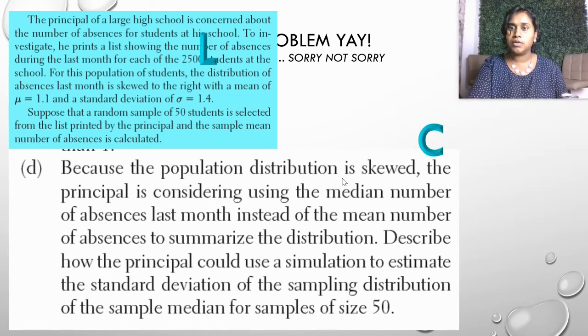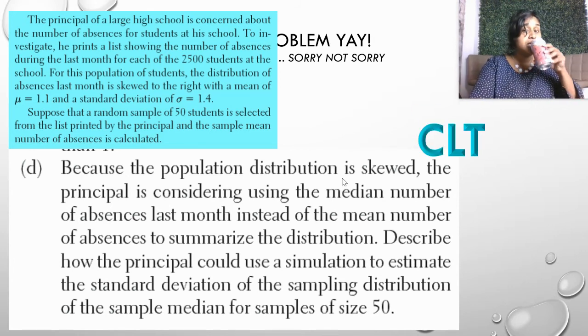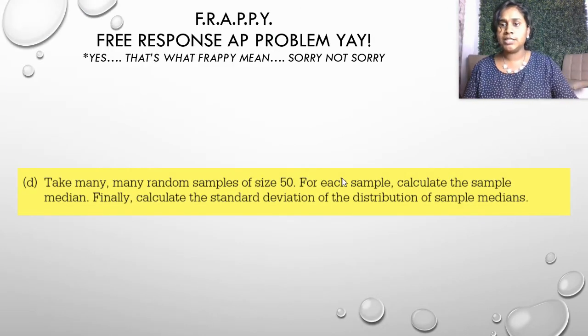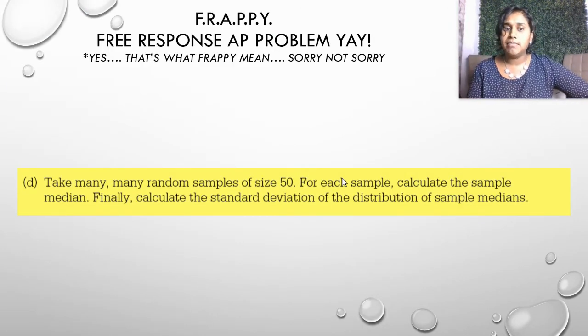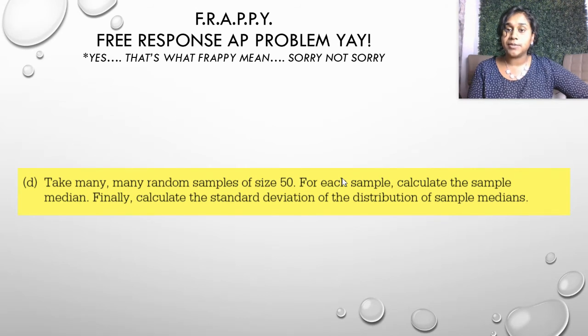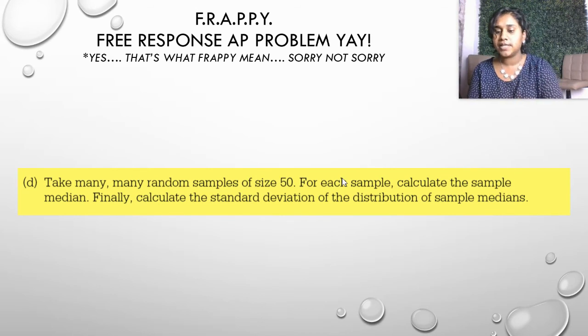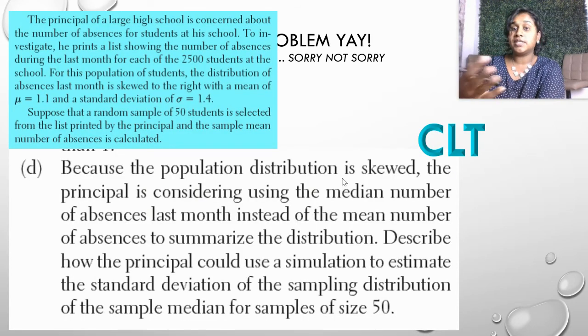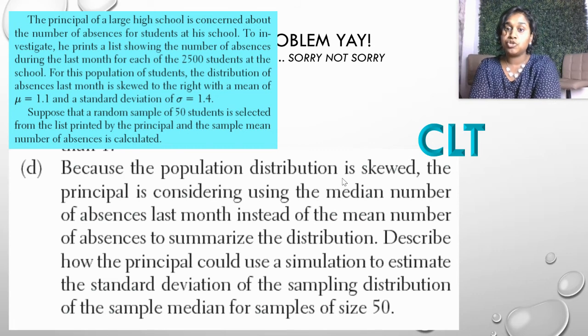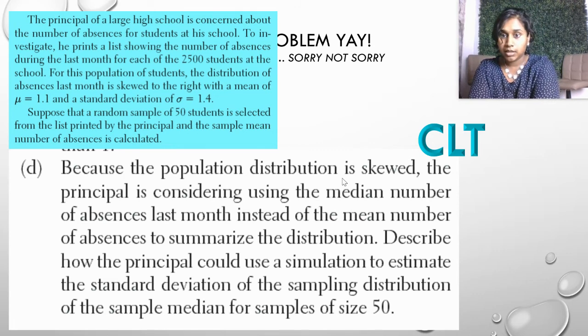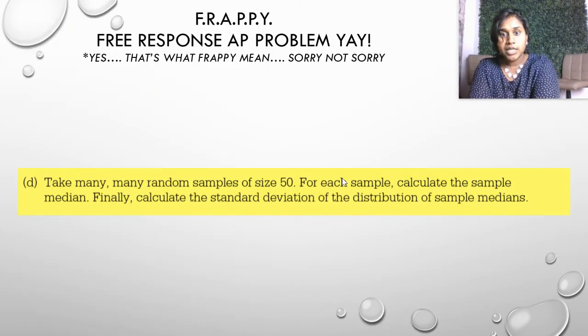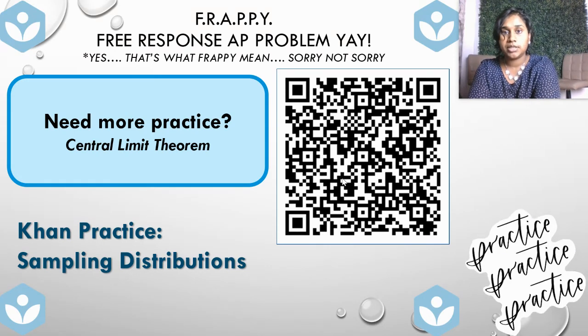Well, their write up was perfect. So I'm going to remind you about that CLT. Take many, many random samples of size 50. For each sample, calculate the sample median. Finally, calculate the standard deviation of the distribution of sampling medians. I challenge you to think about why would this be a more effective method of summarizing the distribution instead of the principal just using the median value. I challenge you to think about that. So we're done with our information. Here's our practice for the central limit theorem.